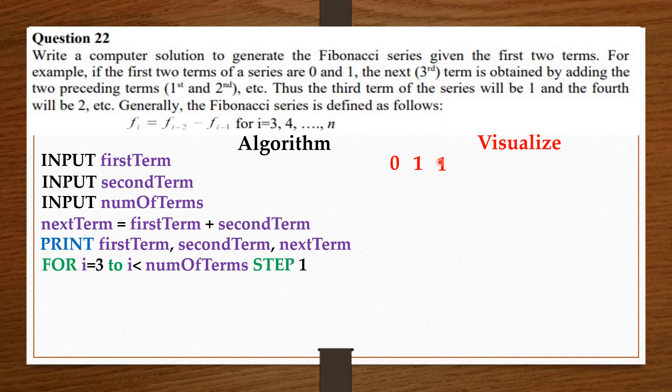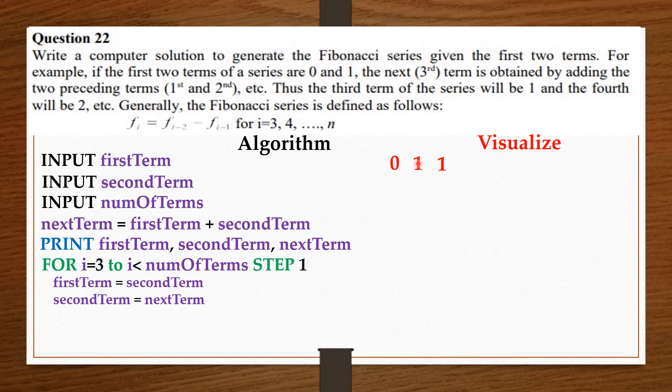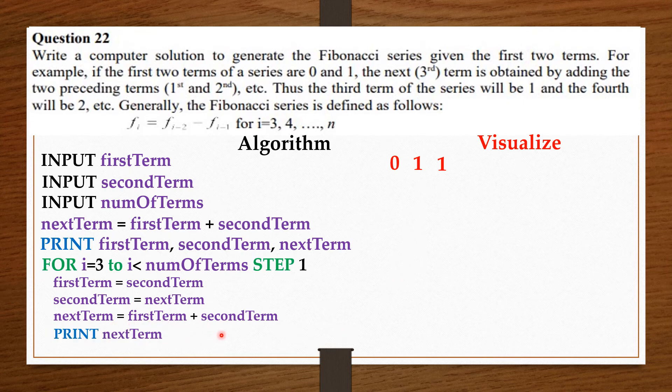Now, to generate the next term after this one, we are going to make the second term, which is 1, the first term. And also, make the next term, which is also 1, the second term. And then, add these current first and second terms up to generate the next term. Now, on generating it, we print out the value for next term, and then we end for.